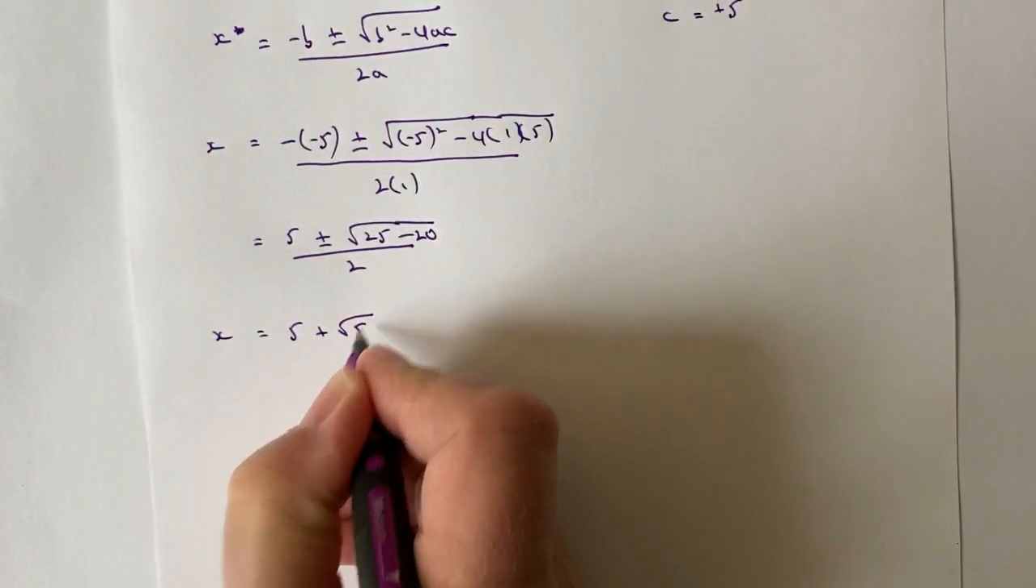So now I've got my two values of x. My first value is going to be x = (5 + √5) / 2, and my second value of x is where x = (5 - √5) / 2.